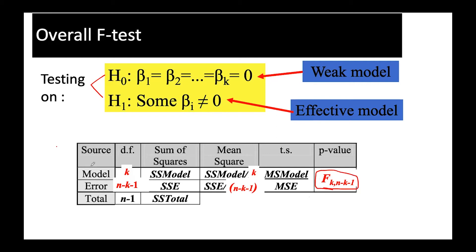In the ANOVA table, I listed the source: the sum of squares from the model, from error, and from the total — which is the sum of SS model and SSE. The f-value is calculated as the mean squared model over the mean squared error.